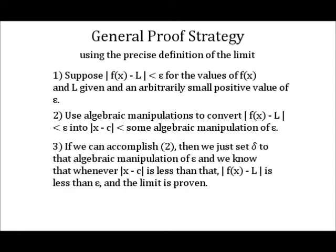Proving a limit using the epsilon-delta definition of the limit can take the following general strategy. First, suppose the absolute value of f of x minus L is less than epsilon for the values of f of x and L given and an arbitrarily small positive value of epsilon.